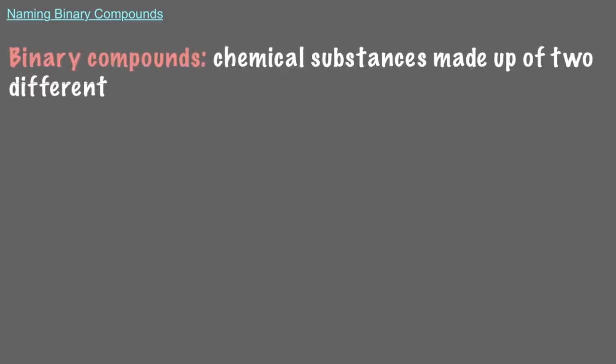In this video, we will learn to name different binary compounds. Having specific names for chemical compounds is important to ensure that there's no ambiguity when referring to a substance. Binary compounds are chemical substances made up of two different elements.